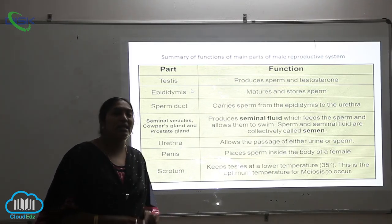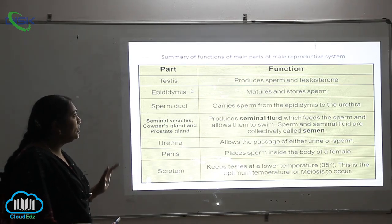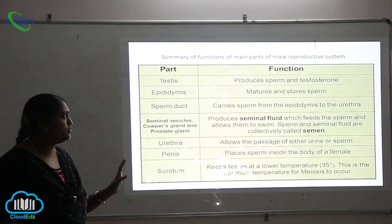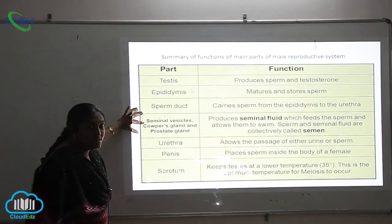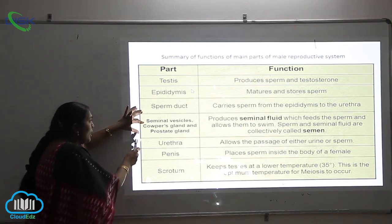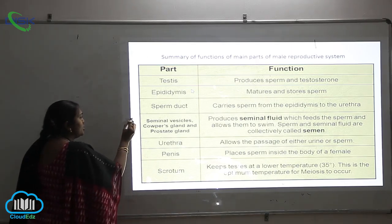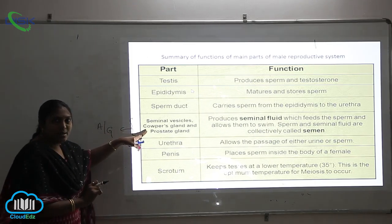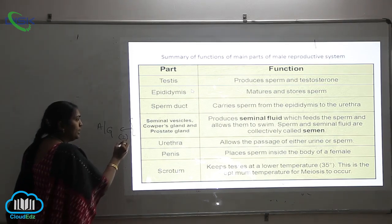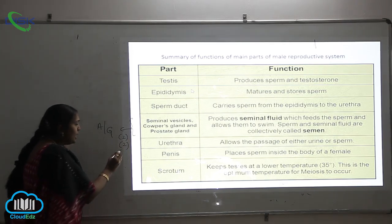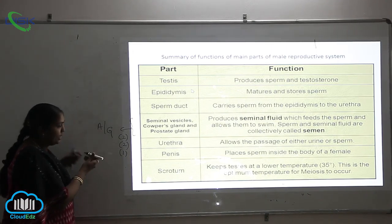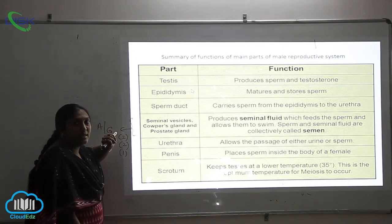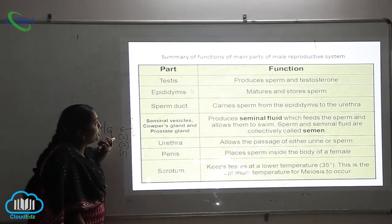Let us see the summary of the male reproductive system and the functions of each and every part arranged in it. As discussed, the seminal vesicles are two in number, corpus glands are two in number, and the prostate gland is only one — these three are the accessory glands. Now let us see the functions of each and every part of the male reproductive system, including the urethra, penis, and scrotum.